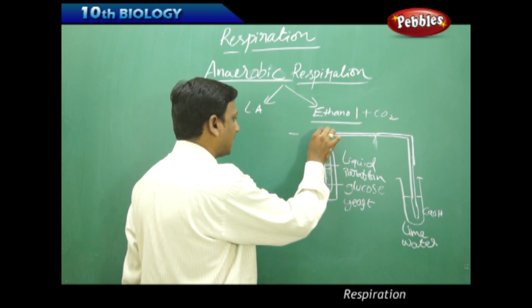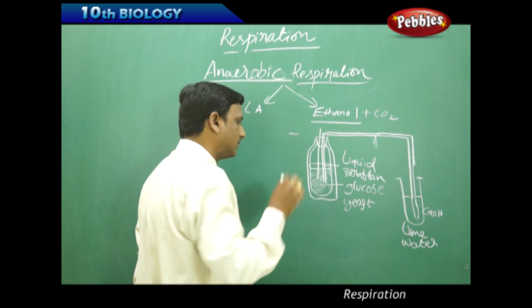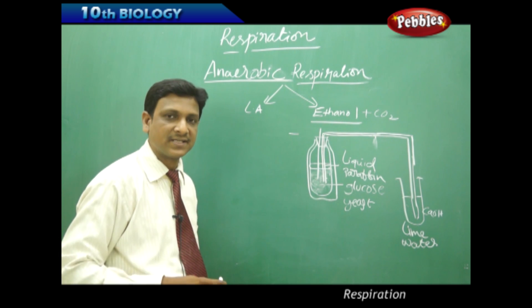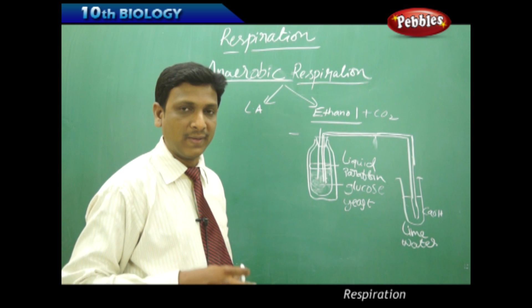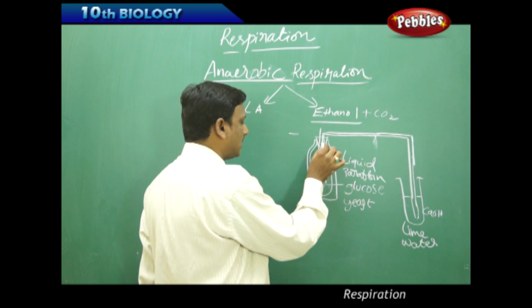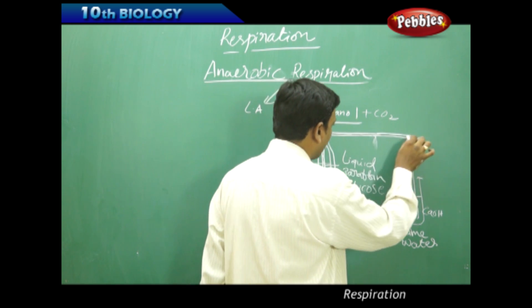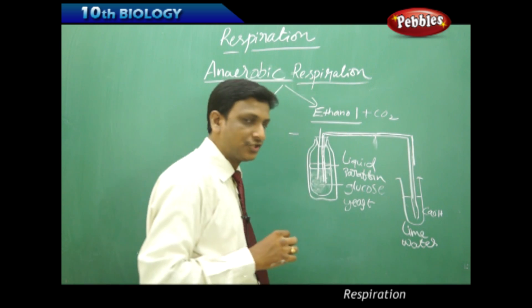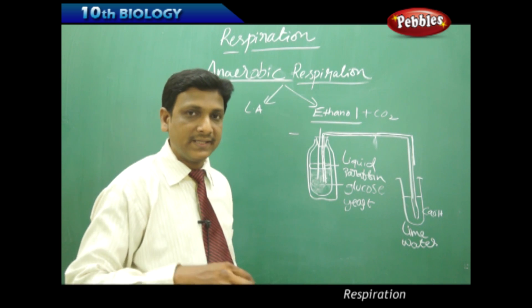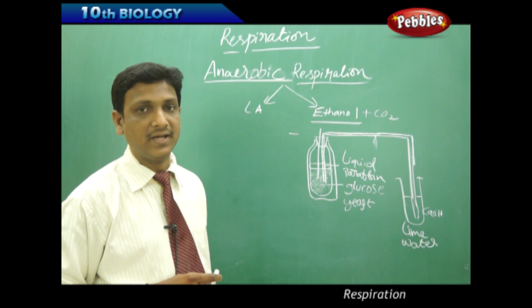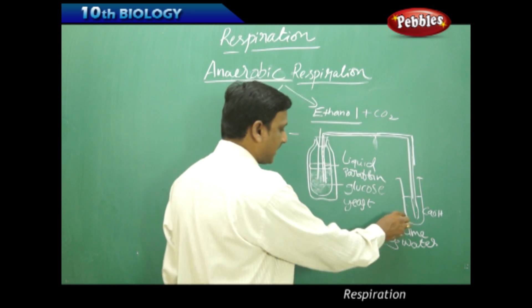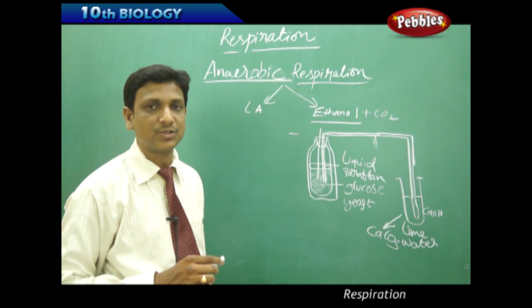Now we have a setup here. We can have a thermometer also in addition. The glucose and yeast react—the yeast converts the glucose into alcohol by anaerobic respiration. During this process, carbon dioxide gas is produced and this gas escapes through this bent pipe and enters the test tube which contains lime water. When the carbon dioxide gas reacts with calcium hydroxide, it makes calcium carbonate and the lime water turns milky white.